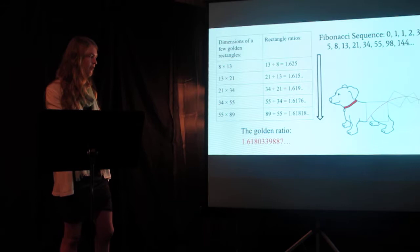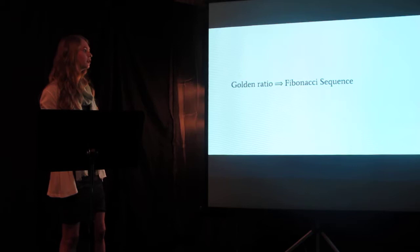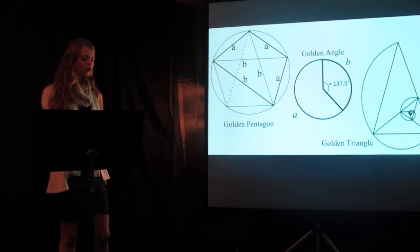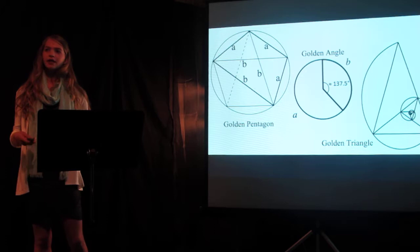It is important to see the connection the golden ratio has to the Fibonacci sequence and how we can get one from the other. A few more forms of the golden ratio can be found in the golden pentagon, the golden angle — which I'll use later, so try to remember that — and the golden triangle. The term golden comes from the ancient theory that these specific proportions hold a profound beauty to the human eye, and this is why it is present in so many human creations.